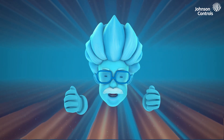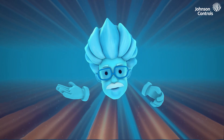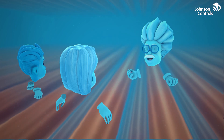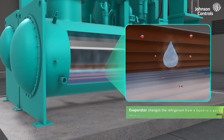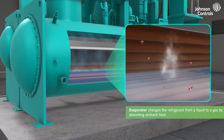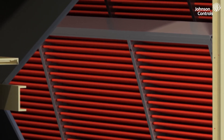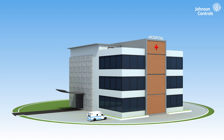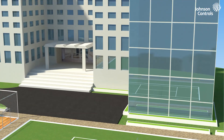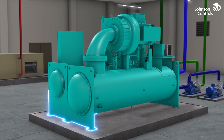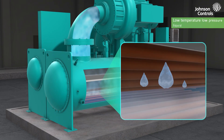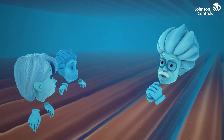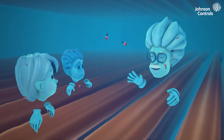The first leg of our adventure starts in the evaporator. The evaporator is responsible for changing us from a liquid to a gas by absorbing ambient heat. Evaporators can be found either in the airstream itself, such as a DX coil in an air handling unit, or for larger buildings such as hospitals and universities, they can be found in something called a chiller. That's where we are now. When we entered the evaporator, we came in as a low-temperature, low-pressure liquid. We are cooler than the chilled water flowing around us, which allows us to absorb all these BTUs, or heat, from it.